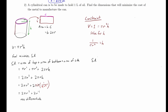The derivative S prime equals 2 pi times 2r plus the derivative of 2r to the negative 1, which is negative 2r to the negative 2 by the power rule. Cleaning this up, we have 4 pi r minus 2 over r squared. Setting the derivative equal to zero: 4 pi r minus 2 over r squared equals 0. Multiplying through by r squared gives 4 pi r cubed minus 2 equals 0.